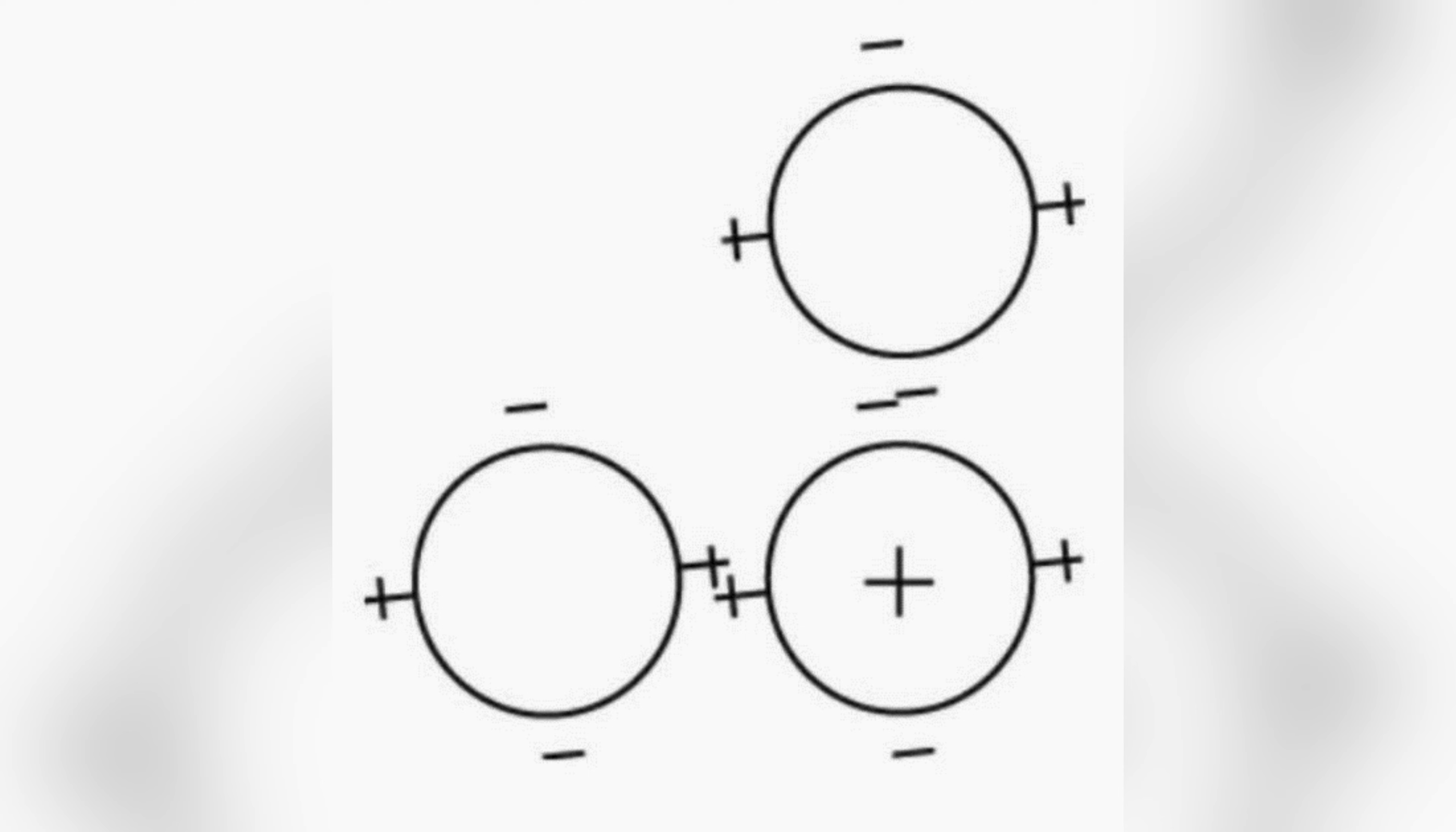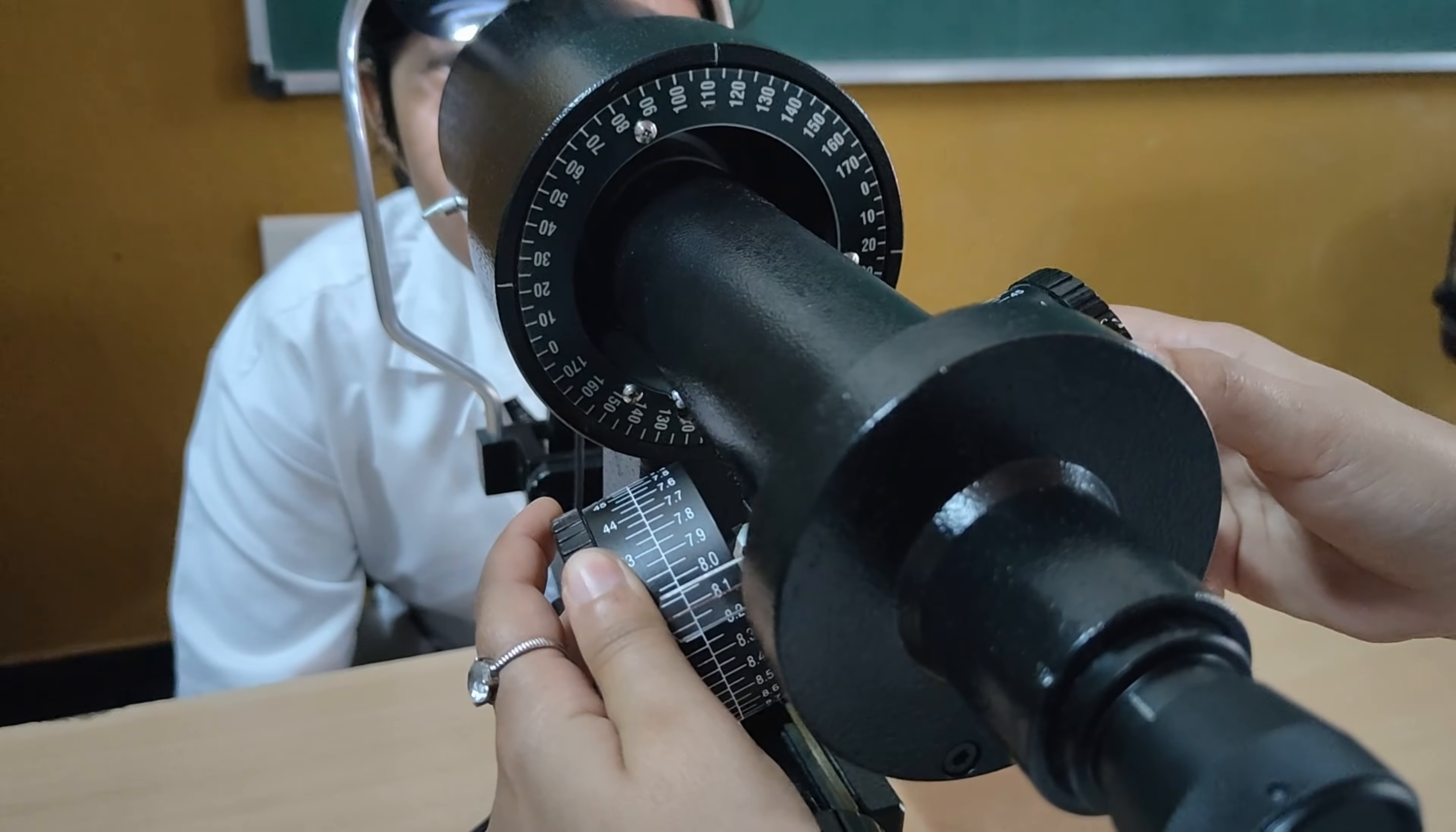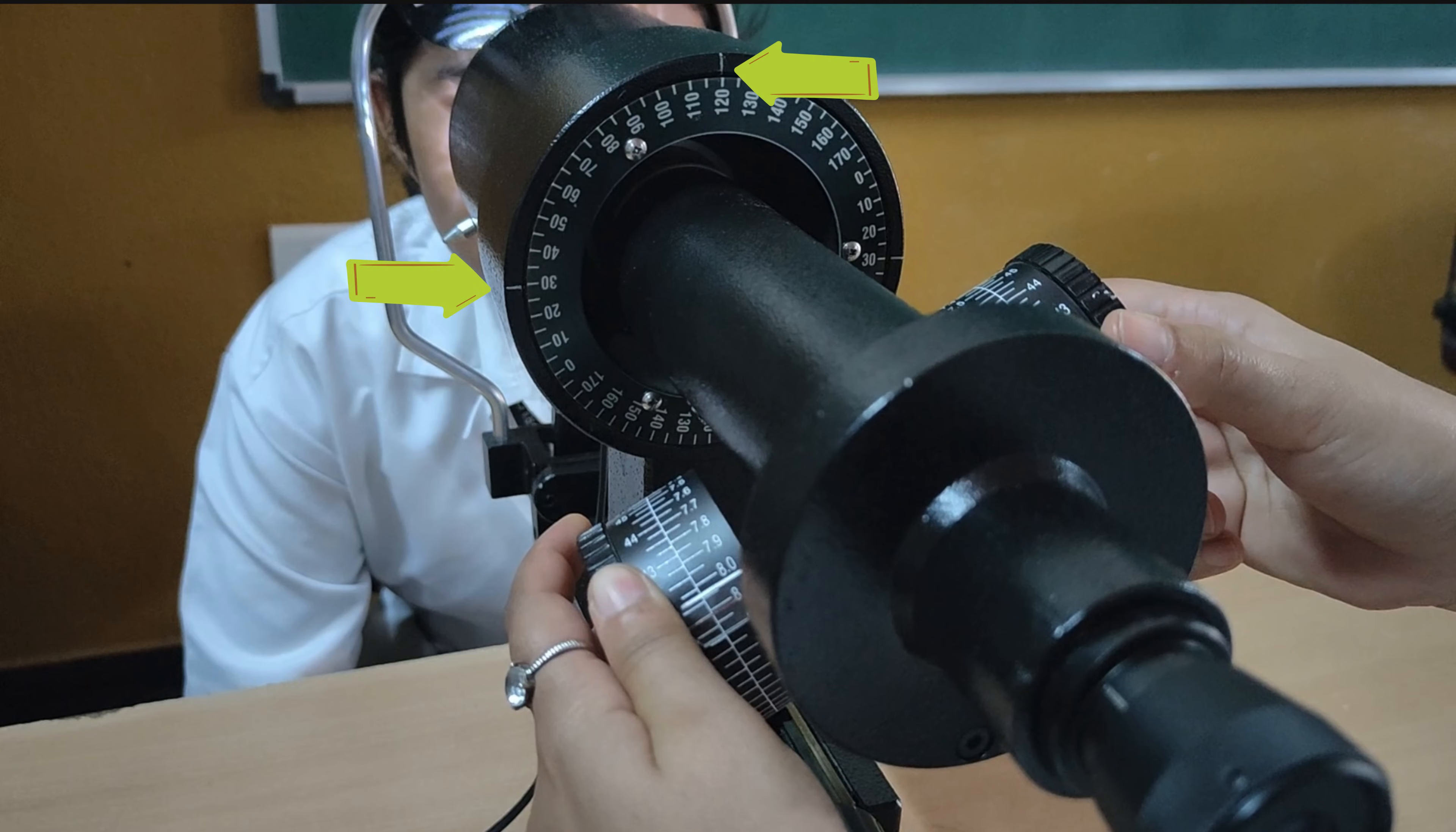In case of oblique astigmatism, mires are not in same plane. In such cases, rotate the instrument until the plus and minus signs are on the same plane. After that, align both plus and minus signs. Record the reading as previously mentioned. But here, axis will be noted from these two points.